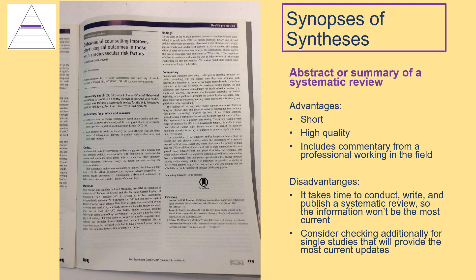There are also some disadvantages when it comes to synopsis of synthesis. The process for conducting, writing, and publishing a systematic review can take upwards of two years, so the information presented may not be the most current information available. Consider also checking for single studies that will update the information provided in the systematic review. We can see that the label of systematic review has been applied to this abstract. Remember that the reference provided in this synopsis is not the reference that you should include in your assignment — it is for the original systematic review that is being summarized here. You should reference the synopsis that you found and used — in this case, Evidence-Based Nursing, not Annals of Internal Medicine.